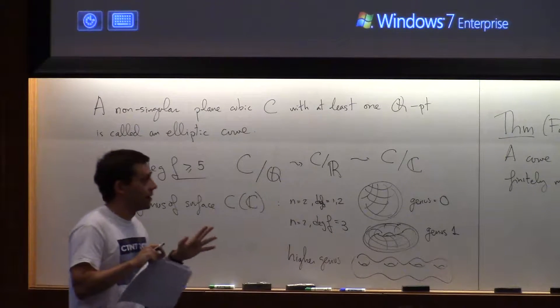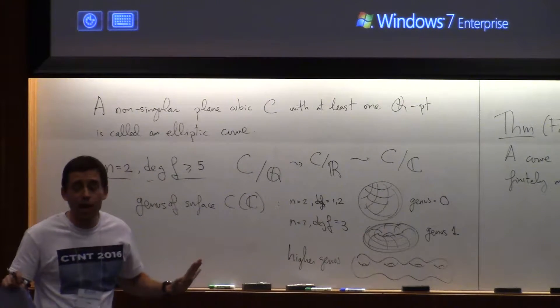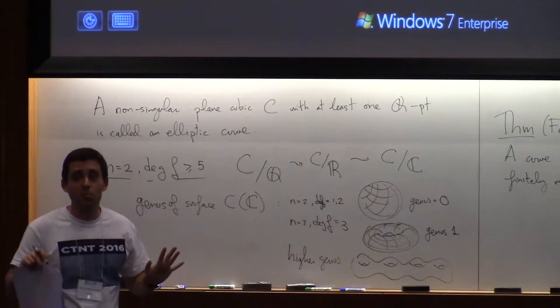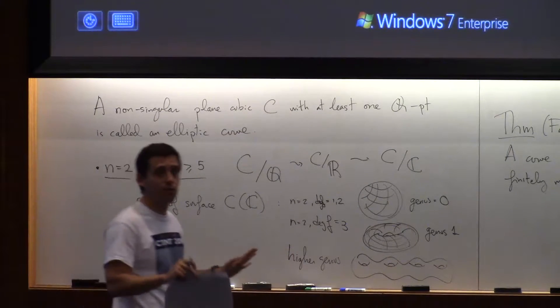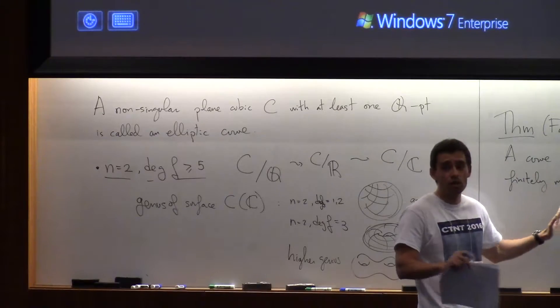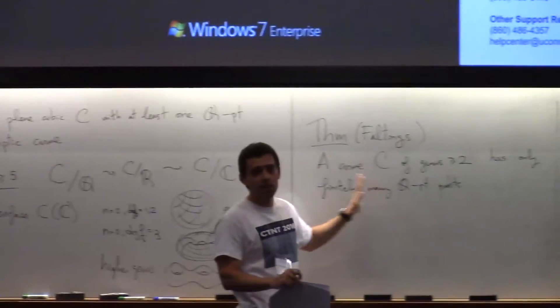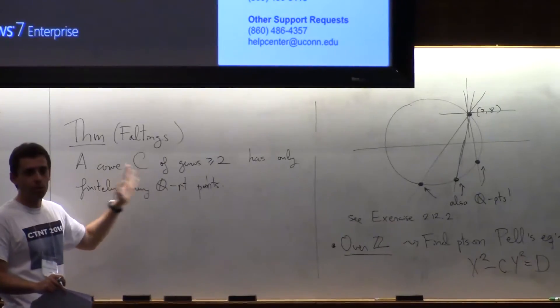But the silver lining is that we're not missing much. Because any of those curves have at most finitely many Q rational points. So at least we're not missing infinitely many points on those curves.